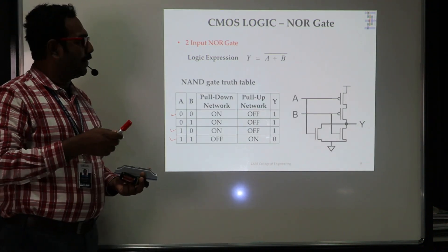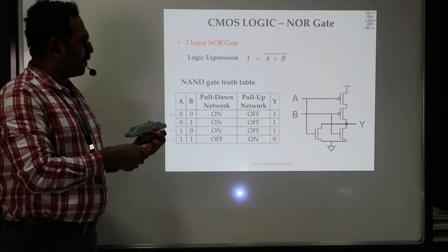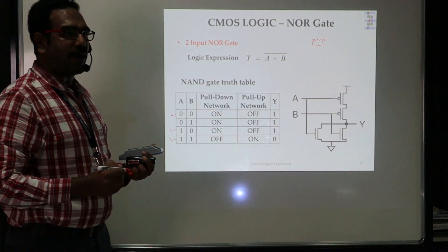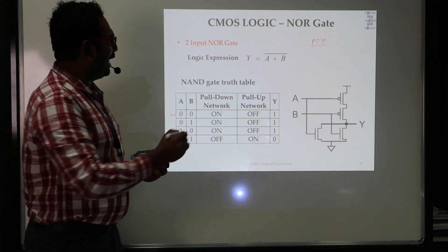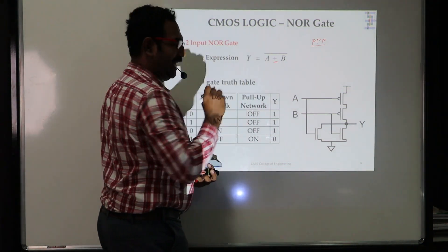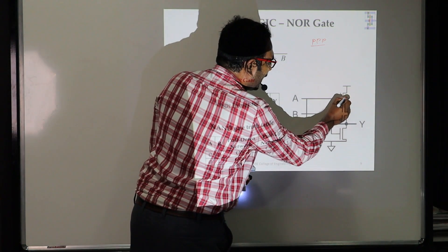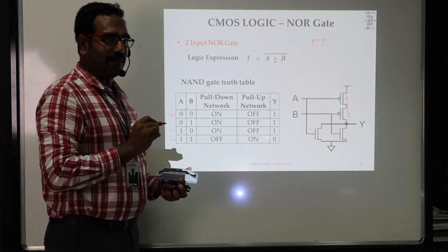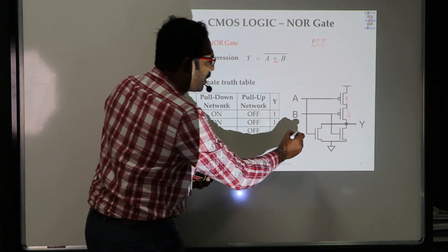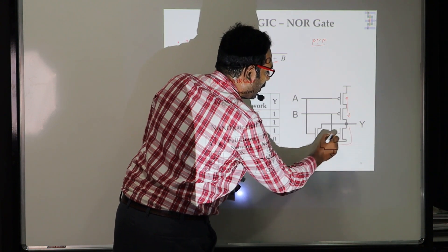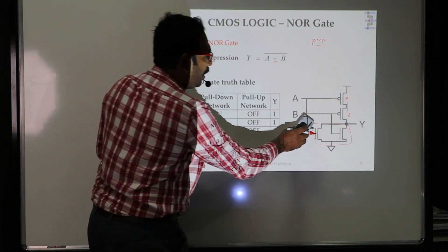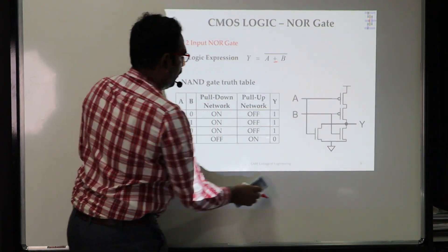Here I have taken the two-input NOR gate logic structure. Again using triple P logic: the NOR expression is a sum term, so PMOS transistors should be in series — both A and B transistors are in series. NMOS transistors should be in parallel for sum terms, so both NMOS transistors are in parallel. From the drain terminal, we can take output Y. We can verify one of the input combinations from the truth table.